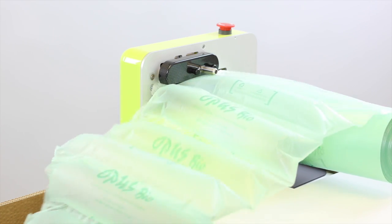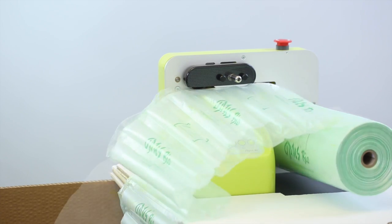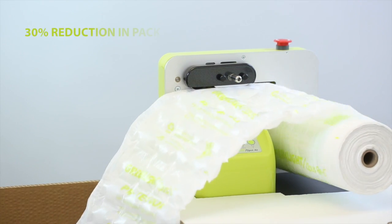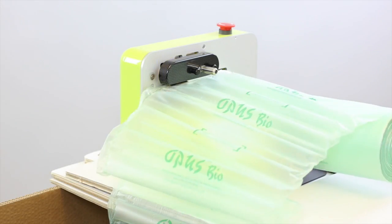Through innovative design, a roll of Opus film can produce up to 30% more volume than some competitive brands. This means 30% fewer cushions per box and a 30% reduction in total pack costs.